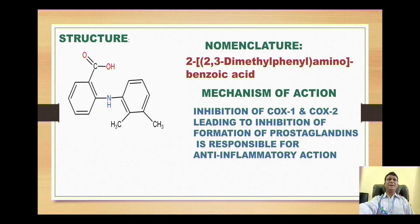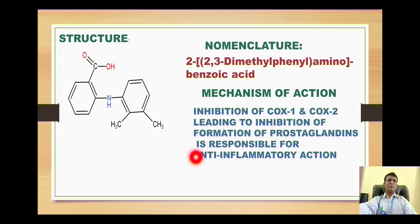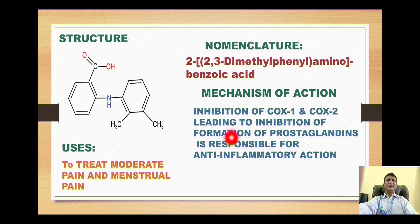Mefenamic acid is a very potent inhibitor of COX-1 and COX-2 enzyme, that is cyclooxygenase-1 and cyclooxygenase-2. These enzymes are responsible for formation of prostaglandins, which are the mediators of pain responses. As COX-1 and COX-2 are inhibited, prostaglandin synthesis is inhibited, and thus no inflammation takes place, giving us the anti-inflammatory action. Besides this, mefenamic acid is used for treatment of moderate pain and pain related to the menstrual cycle.